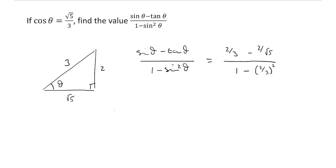So we've already done all the work. We've just got to simplify our algebra now. So let's start with the denominator. We're going to have 2 thirds minus 2 upon root 5. We know that 2 thirds squared is going to be 4 upon 9. And 1 minus 4 upon 9 is 5 upon 9.